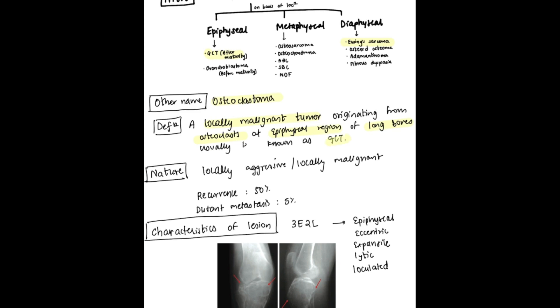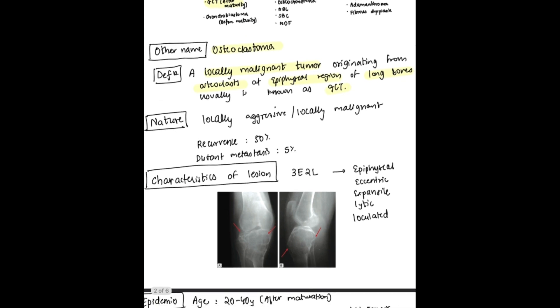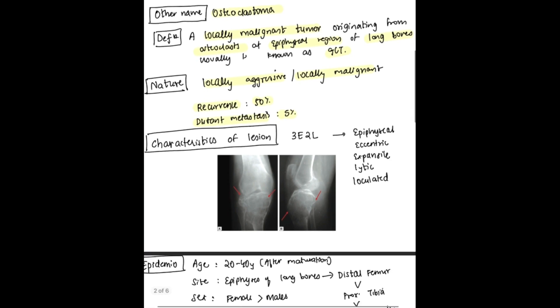What is the nature? It is locally aggressive or locally malignant. The recurrence rate is 50%, while distant metastasis occurs only in 5%, which means malignant tumors are only 5%.